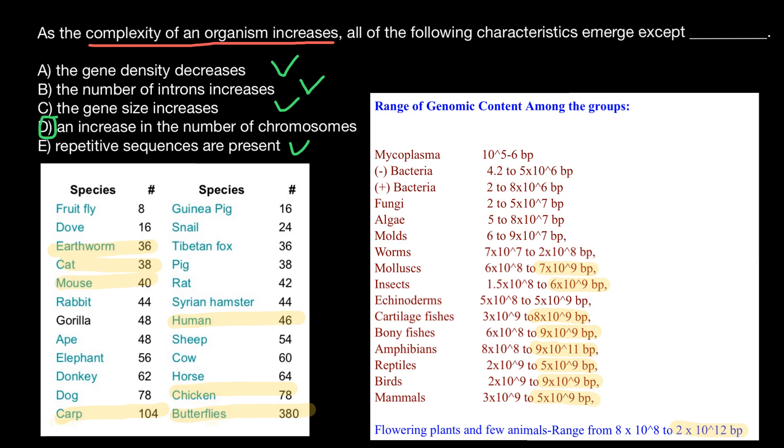And what's funny - take a look. Humans have 46 chromosomes, and gorillas and apes have 48 chromosomes. Isn't it funny? As you see, again, number of chromosomes and genome size don't reflect the complexity of the organism.